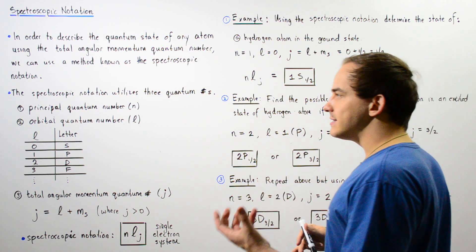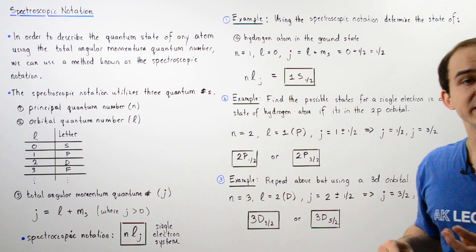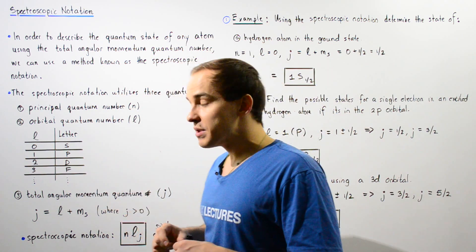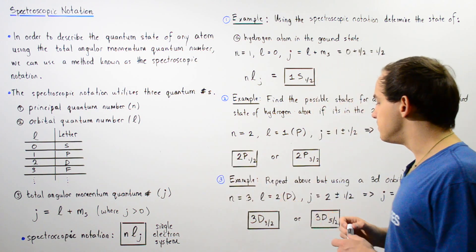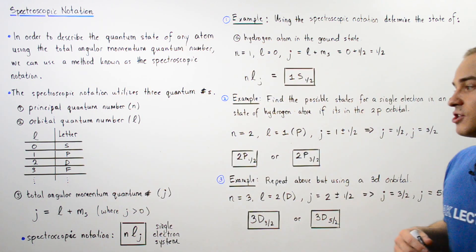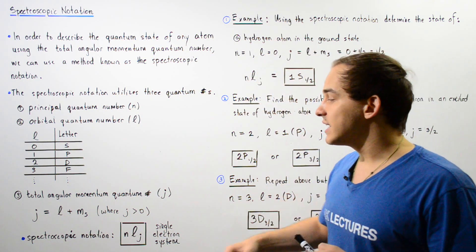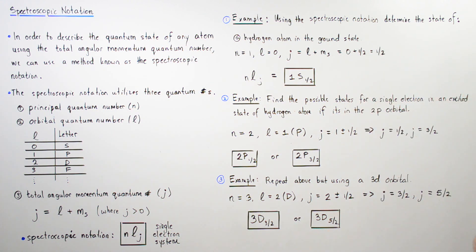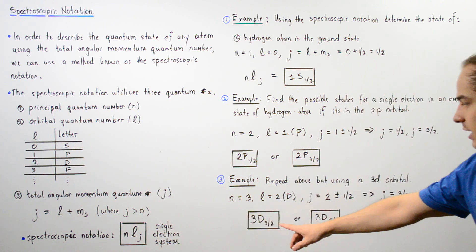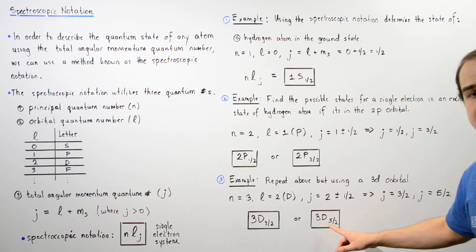Example three repeats example two, but now the electron is found in the 3d orbital. So n equals 3 and l equals 2, which corresponds to uppercase D. Applying the same equation with ms equal to positive or negative one-half, j is either three-halves or five-halves. Therefore, the two possible spectroscopic notations for the quantum state of this excited hydrogen atom in the single electron system are 3d subscript three-halves and 3d subscript five-halves.